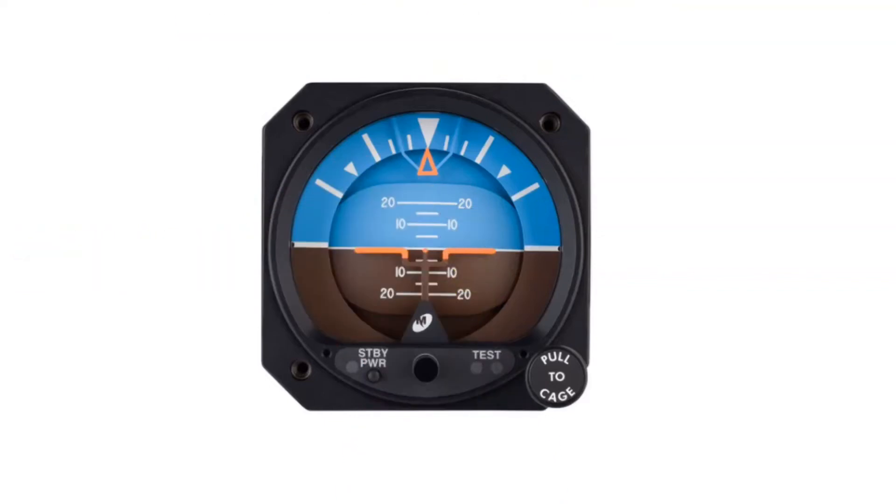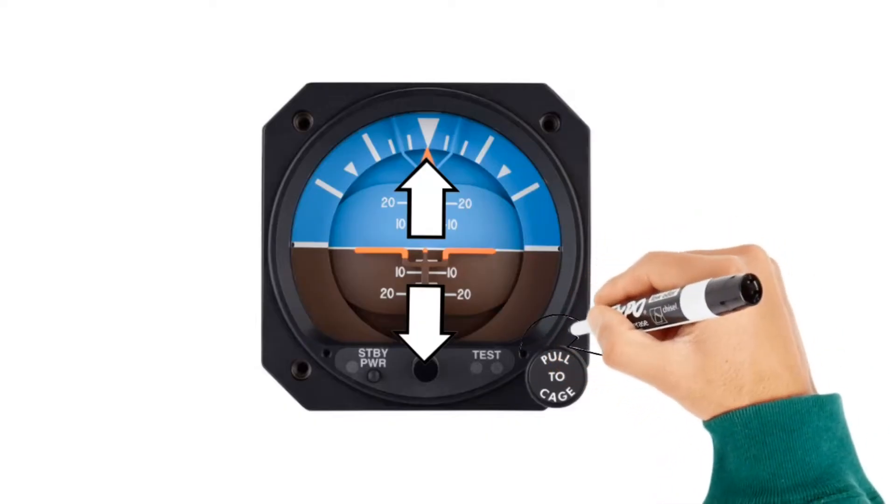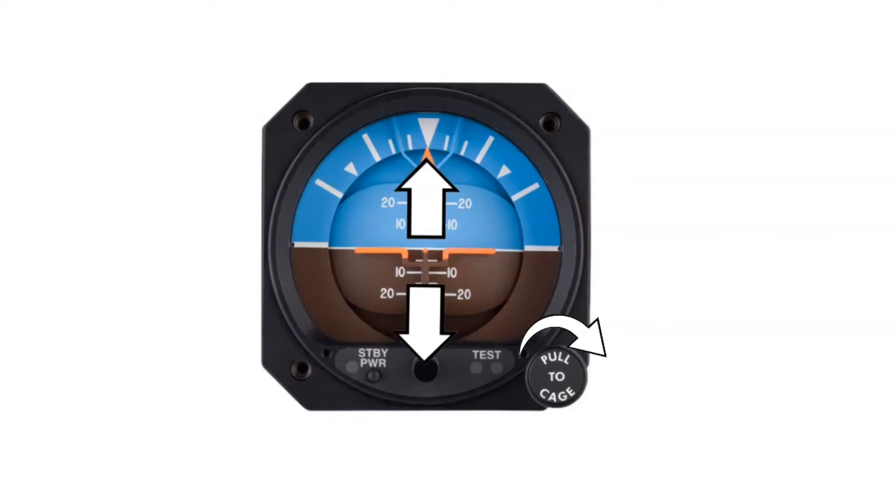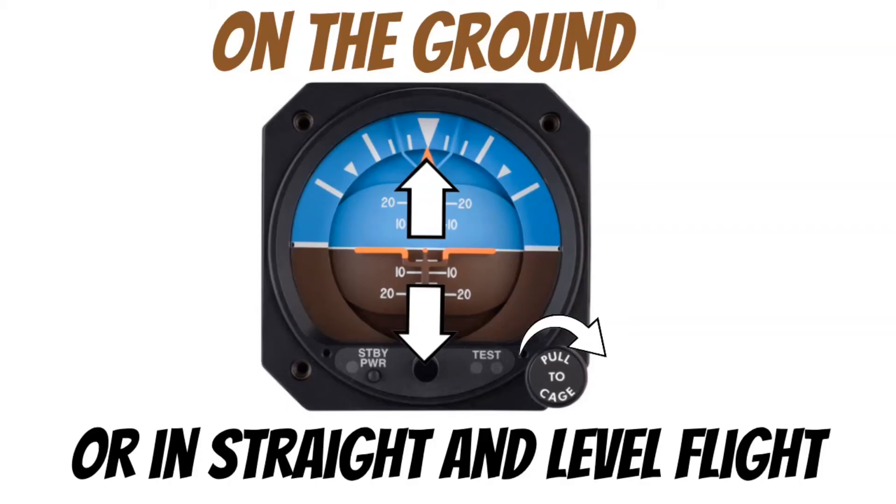Now, this miniature aircraft can be adjusted up or down to accommodate pilots of different heights. And you can do this by twisting this little knob left or right. And when you do this, you should really be on the ground for this. Or, if you have to do it in flight, you should be in straight and level flight.